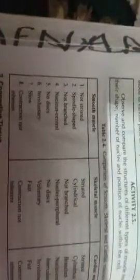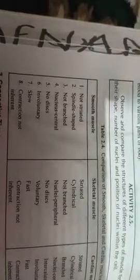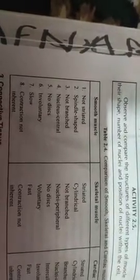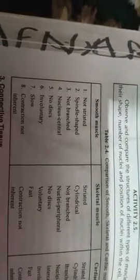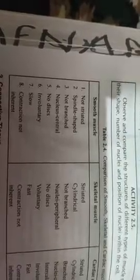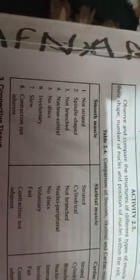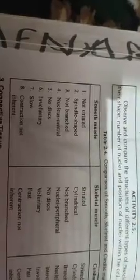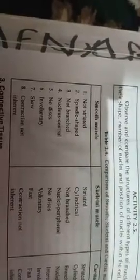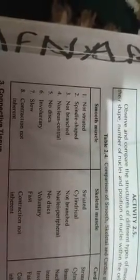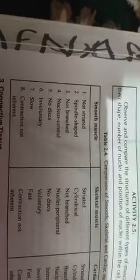While the skeletal muscle is striated, cylindrical, not branched, nucleus peripheral, no discs, voluntary, it is fast and contraction is not inherent.